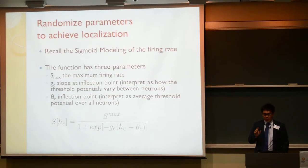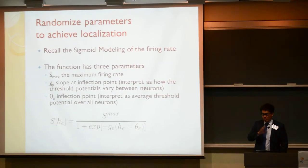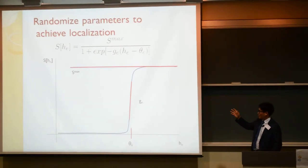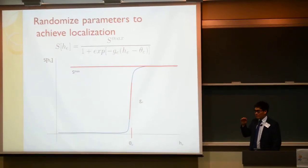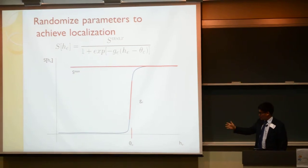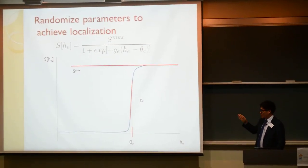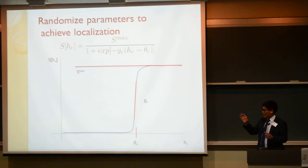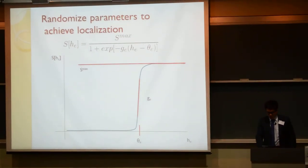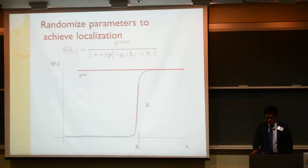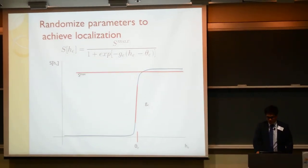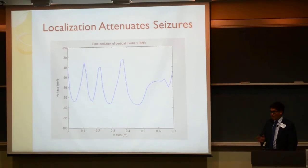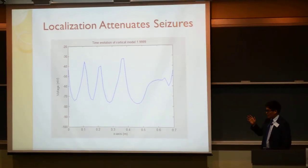So we want to figure out a way to randomize some of the parameters in the model. Remember the previous equation — S-max is the maximum firing rate of a population of neurons, theta is the average threshold potential, and G is related to the spread of threshold potentials across the population. If you have a larger spread of neurons, the slope will be very small. These are fixed parameters in the original model, so we want to randomize them. If we randomize the threshold potential, what you'll see is that the seizures will be attenuated.